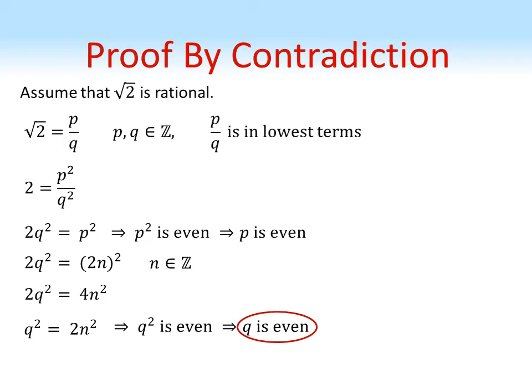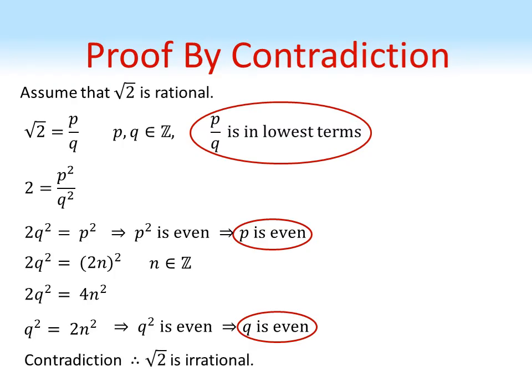We've now got that q is an even number and p is an even number. And we started off by assuming that p over q is a fraction in its lowest terms. But if p and q are even, they must both be divisible by 2. Hence we could simplify the fraction p over q. So therefore we've got a contradiction of our original assumption. And because of this contradiction, root 2 must be irrational.